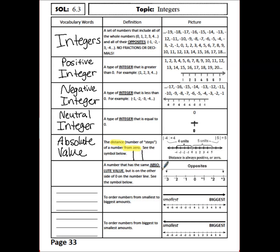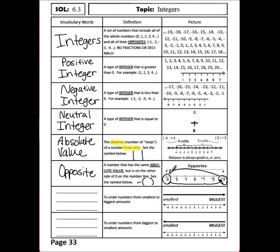A number that has the same absolute value, but is on the other side of 0 on the number line. The symbol used is a negative sign to show the opposite of a number. The opposite of negative 3 would be positive 3, and the opposite of positive 3 would be negative 3.